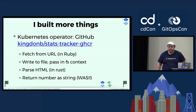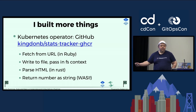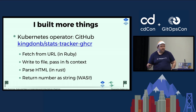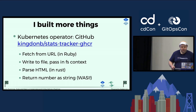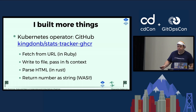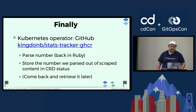Here's what I wound up building: in Ruby, we fetch from the URL and write it to a file. We pass that file system context to a WebAssembly written in Rust, which is an HTML parser. Then we return a number as a string — because I want to parse the string — and that's WASI right there. That's what we're using for that piece.